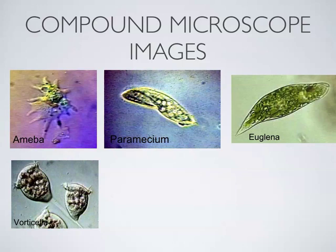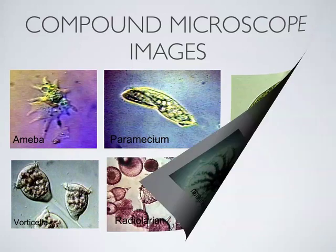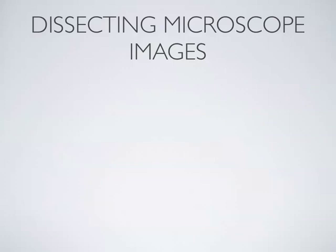The dissecting microscope also gives you a three-dimensional view of the object. The reason is the two eyepieces. In order to get a three-dimensional view of an object, you need two eyes working. Animals that see well in three dimensions — like a cat, a monkey, a raccoon — have two forward-facing eyes and good depth perception. A fish, with two eyes on the side, can't see depth very well, but can see a wide range.